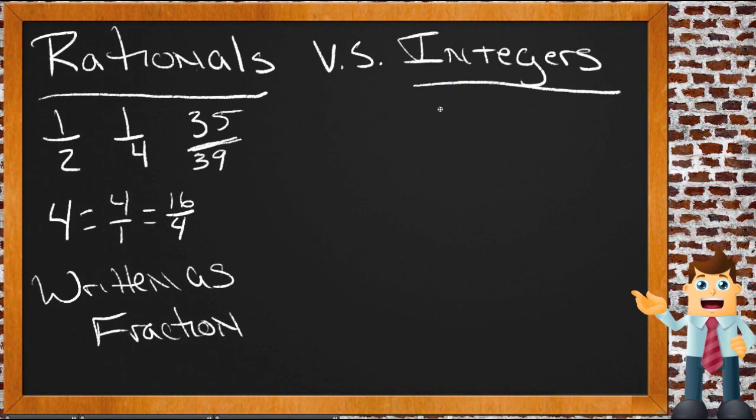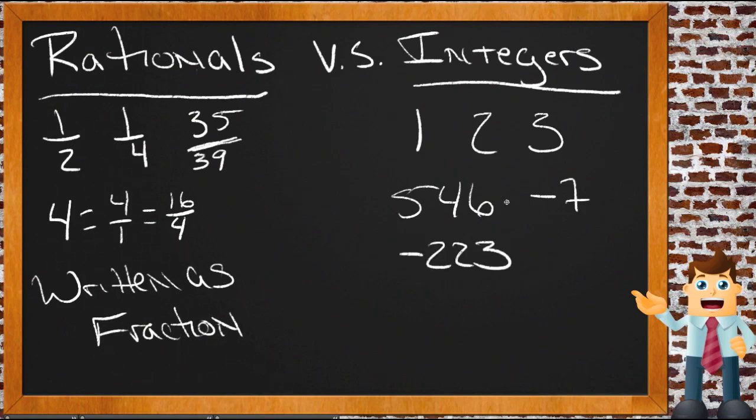Integers are numbers that don't need to be written as fractions. They are whole numbers. They're the counting numbers. 1, 2, 3, 546. These are all integers. Negative 7, negative 223. Those are all integers.